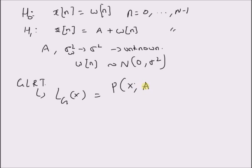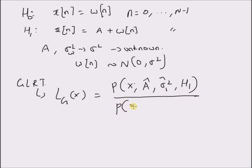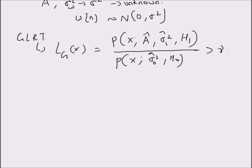Given the maximum likelihood estimates of the unknown parameters A-hat and sigma squared: sigma-one-squared-hat denotes the estimate of the variance under the alternate hypothesis H1, with the probability distribution of x where we use the estimate of the variance under the null hypothesis. This likelihood ratio is compared with a threshold gamma, using the maximum likelihood estimates in place of the unknown parameters.